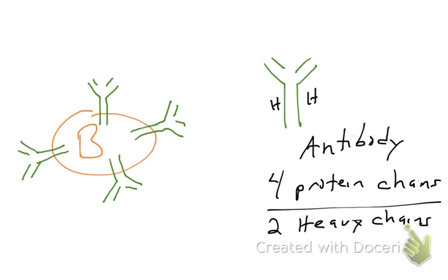There are two heavy chain proteins. These are the larger, longer proteins on the outside of the Y. They're called heavy chains because on a gel, they were noticed to have a large molecular weight compared to the two smaller proteins found in an antibody called light chains. There are two light chains, which are identical to one another, and two heavy chains, which are identical to one another.